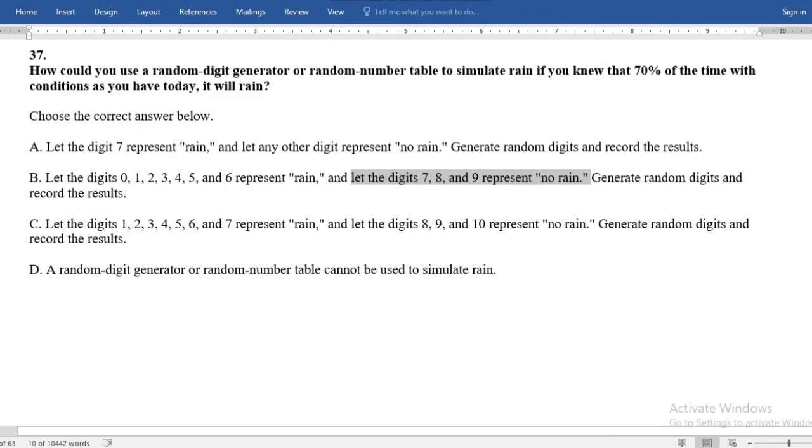The correct answer is option B. Option B, this one is the correct answer because 70% would be rain and 30% would be no rain.